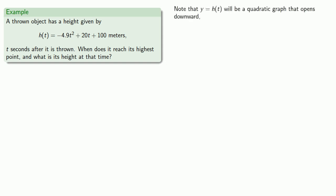Note that y equals h of t will be a quadratic graph because there is a t squared, and it opens downward because the coefficient of t squared is negative. So it will have a highest point. Since that highest point is on the line of symmetry, we find the line of symmetry.